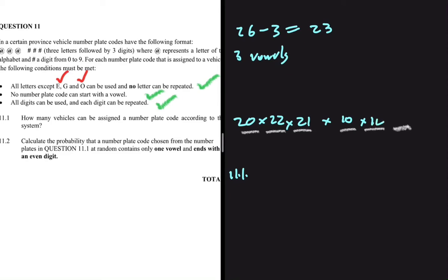The second digit position can also have one of 10, and the third digit position also has one of 10. Putting all of that into the calculator — 20 × 22 × 21 × 10 × 10 × 10 — you get 9,240,000 vehicles that can be assigned a number plate according to this system.